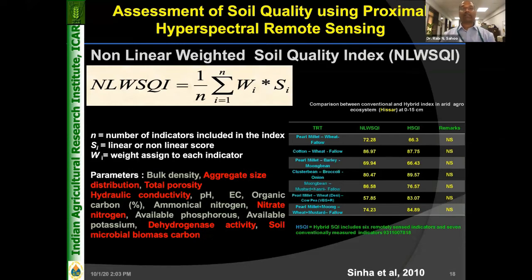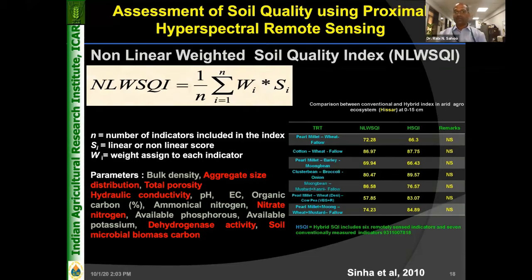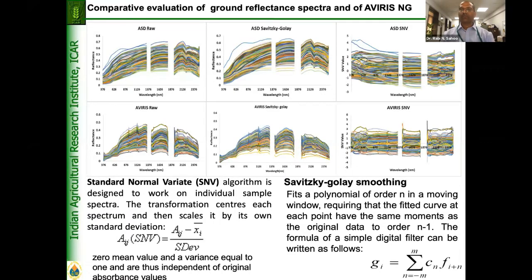Coming back to soil quality: these are the parameters taken together for a composite soil quality index monitoring. The question was: can spectral data be used for soil quality monitoring? This was addressed by Dr. Sina and his group in different cropping systems. Some parameters that could not be retrieved from spectra were taken from conventional approaches, combined with spectrally derived parameters to derive a hybrid soil quality index. Comparing the conventional non-linear weighted soil quality index with the hybrid soil quality index, there is hardly any difference — meaning there is an opportunity to assess soil quality from spectrometry.